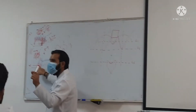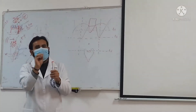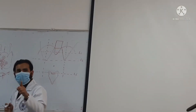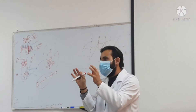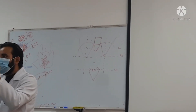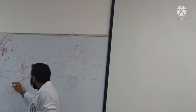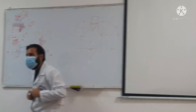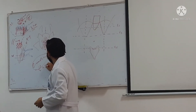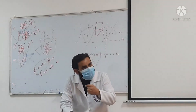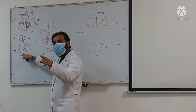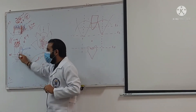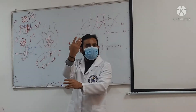Grade one: hemorrhoidal plexus are simply bulging inside, which we can see only by proctoscope or anoscope — no prolapse outside. Grade two: they bulge out and prolapse during defecation, but after defecation they go back in by themselves. Grade three: they prolapse out during defecation or straining and you need to manually push them back with your finger.